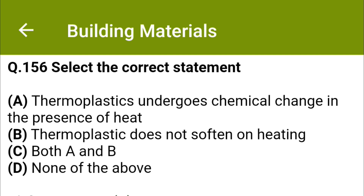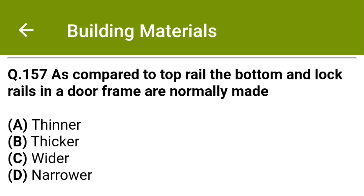As compared to top rail, the bottom and the lock rails in a door frame are normally made: option A thinner, option B thicker, option C wider, option D narrower. The correct answer is option C: wider.